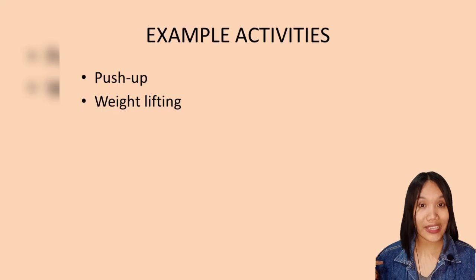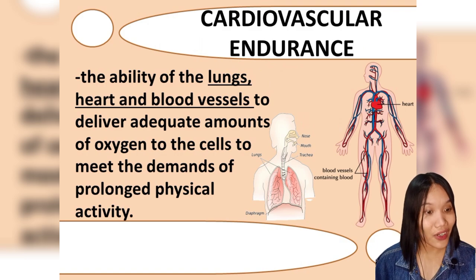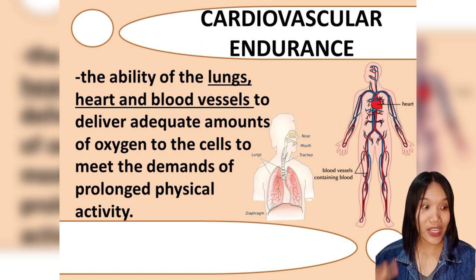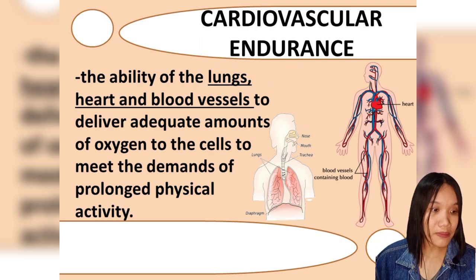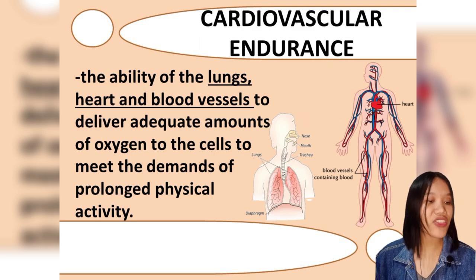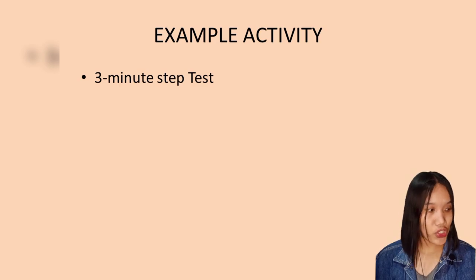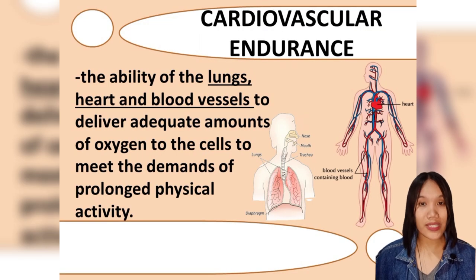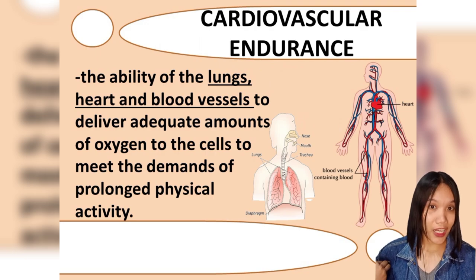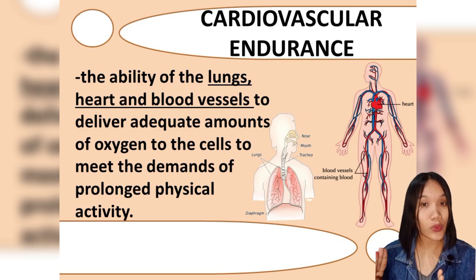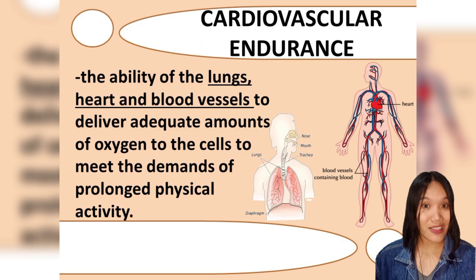Cardiovascular endurance is the ability of your lungs, heart, and blood vessels to deliver an adequate amount of oxygen to the cells to meet the demands of prolonged physical activity. The key terms here are lungs, heart, and blood vessels. Since it involves endurance, it deals with time — how long your cardiovascular system can perform during a certain activity.